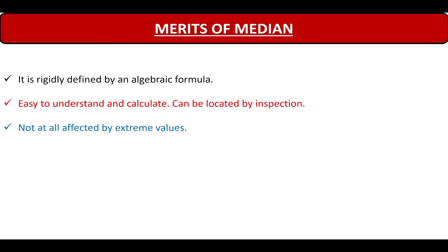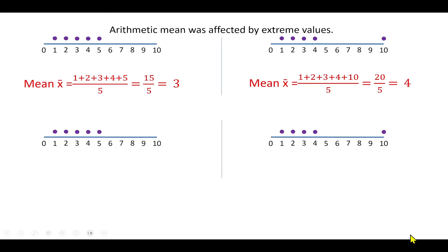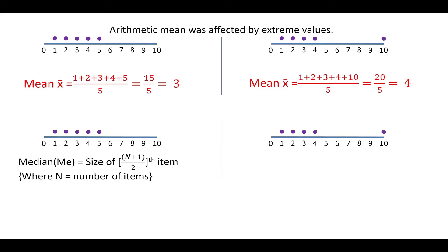Next, it is not at all affected by extreme values. This is a very important property. In case of arithmetic mean, we had seen that when we took a series without any outlier, the mean was 3. But when we took an extreme value such as 10, the mean had shifted to 4. So an outlier had affected the value of mean. But in the case of median, let us calculate the median for the first 5 items. If items are odd, we calculate median by using the size of the (n+1)/2 th item, that is (5+1)/2, which is the third item. The value of the third item is 3, so the value of median is 3.